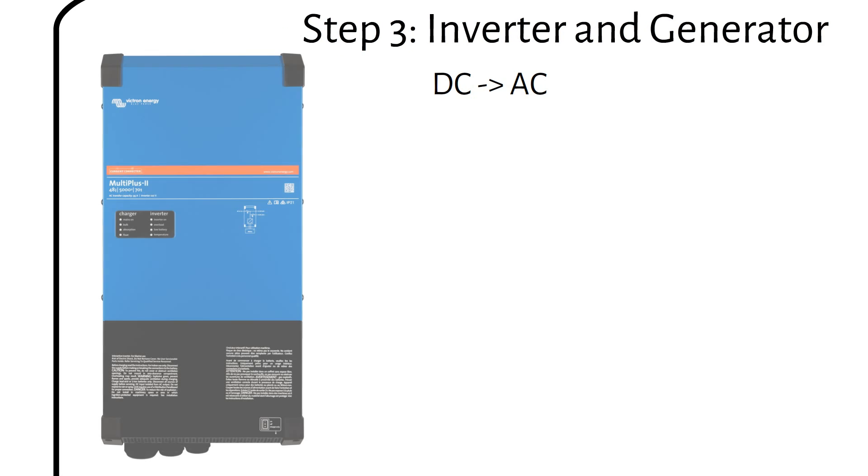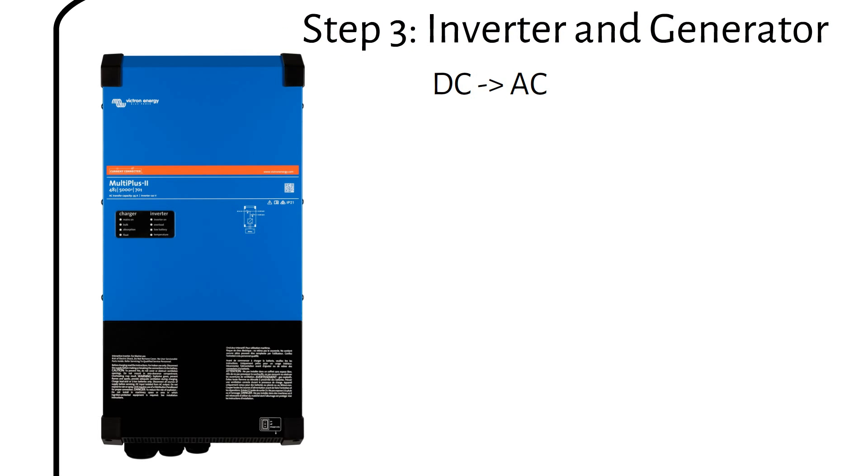In step 3, we will choose an inverter and a backup generator. The inverter will convert the DC electricity stored in your batteries into AC electricity that your household appliances can use. I recommend the Victron MultiPlus 48V 5000VA low frequency inverter. Here is why.